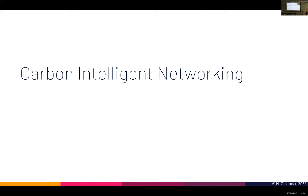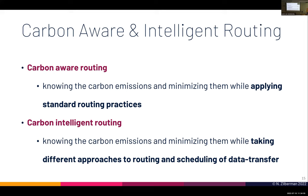That brings me to carbon intelligent networking. Starting with routing — what's the difference between carbon aware routing and carbon intelligent routing? In carbon aware routing, I have some information about carbon emissions and I'm looking to minimize them while still applying standard routing practices. So I have limited information about energy rating and I find the best route accordingly.